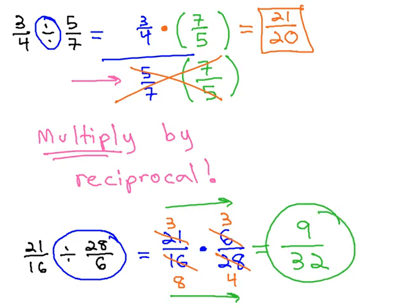Division with fractions is simply a multiplication problem with one extra step. We will always start by multiplying by the reciprocal.